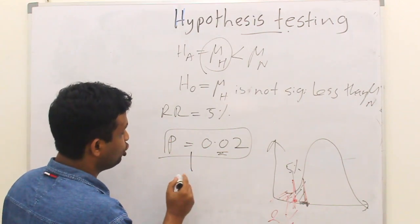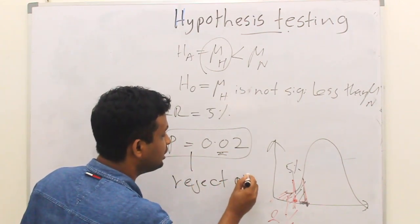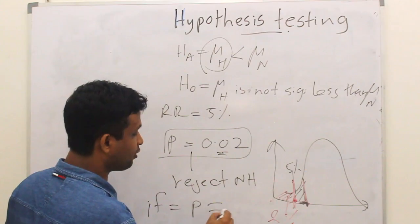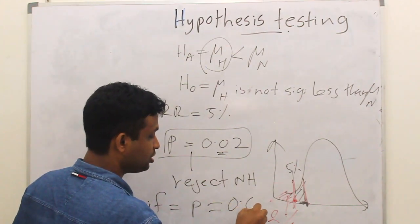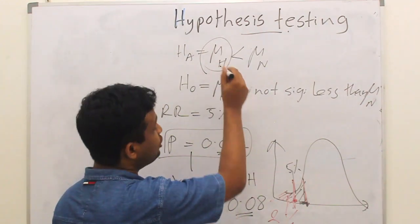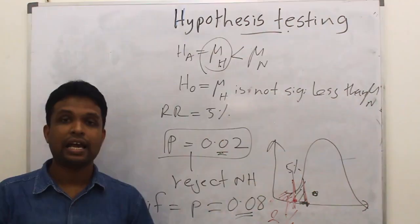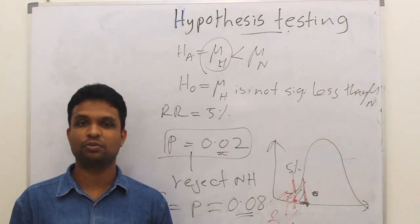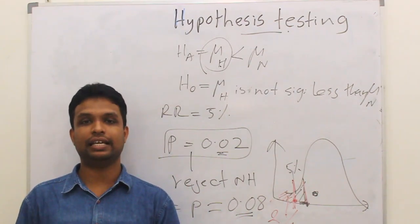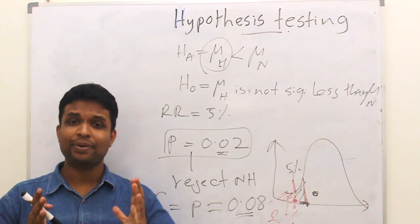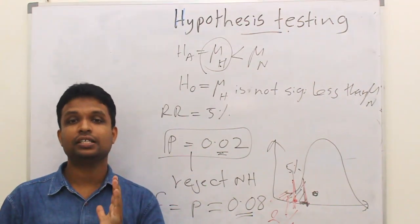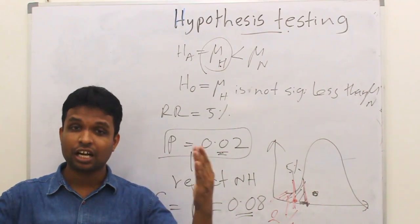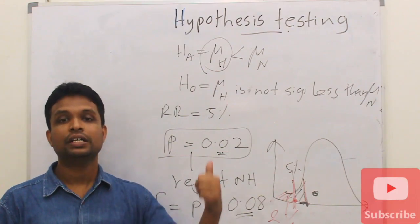If your p-value equals 0.08, that means this value is somewhere outside the rejection region. As 8% is there, we do not reject the null hypothesis — there is no evidence, because 8% of normal people are less than that. I hope you are clear and have a basic understanding about hypothesis testing. In any of the tests I am going to discuss in the coming lectures, you have to follow these procedures.